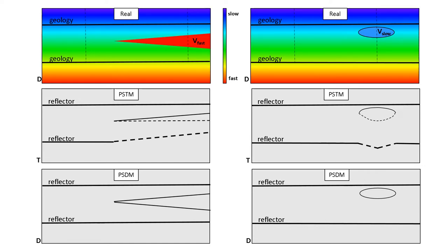Of course, assuming you're doing the depth migration correctly. Two models here at the top. On the top left is a lateral velocity change where we go from normal to something fast, indicated by this red fast triangle. Top right is the opposite of that. We have a slow velocity anomaly, indicated by this V-slow blue oval.